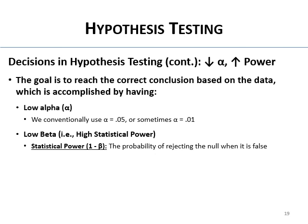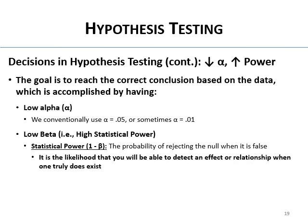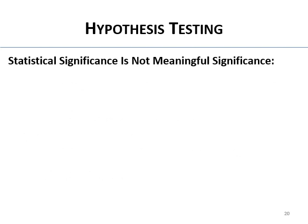Statistical power is your probability of rejecting the null when you should, or finding an effect when one truly does exist — your ability to say these two things are related or this drug really is better. The goal is not only to keep alpha at no more than 0.05, but also to have statistical power of 0.80 or higher. We want at least 80% power in a dissertation, and we'll talk about how to achieve that.